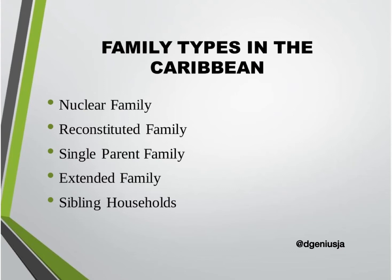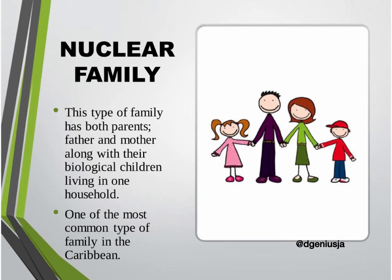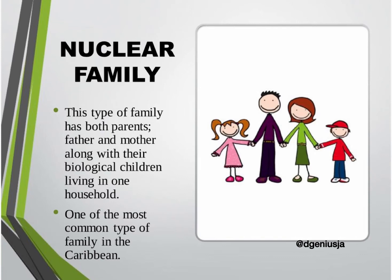We have nuclear family, reconstituted family, single parent family, extended family and sibling households. Let's begin this lecture by thinking of an imaginary couple and their children — Carl and Deesha — who live together with their children Kevin and Carla. Carl and Deesha living together with their children Kevin and Carla would be considered a nuclear family. This type of family has both parents, father and mother, along with their biological children living in one household.